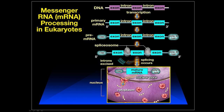In eukaryotes, let's think about messenger RNA processing as a whole. At the DNA level, there are exons and intervening sequences. In the primary mRNA that comes right off the DNA, all this information is present. We recognize exons and introns in the pre-mRNA. Our goal is to get rid of the introns and join the exons together in a seamless and smooth way.